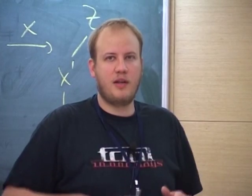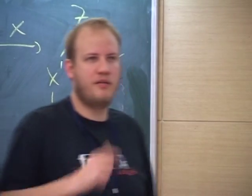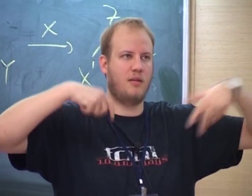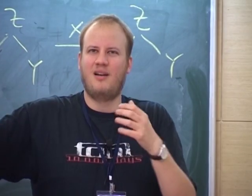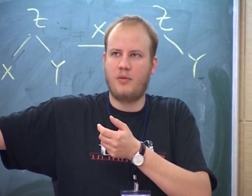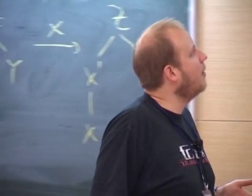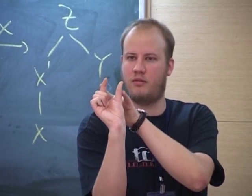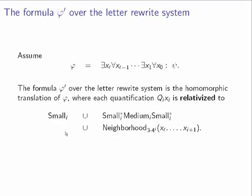Phi' is just the homomorphic translation of phi, but the quantifiers are relativized. Instead of talking about the existence of trees, the resulting formula phi' talks about properties over words in the letter rewrite system. I additionally restrict those quantifications: if I have quantifier Q_i x_i, I restrict it to range over either small trees (as one-letter words), or words where exactly one letter is a medium tree and the rest of the prefix and suffix are small trees.